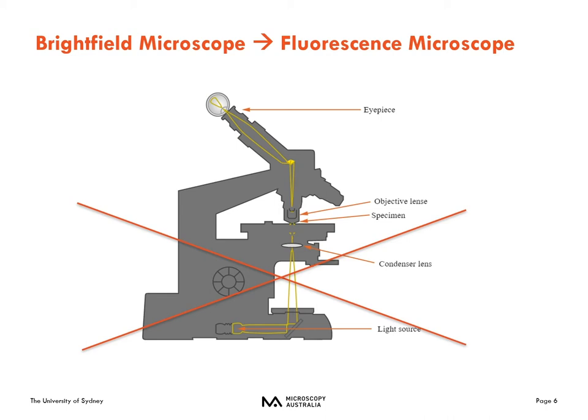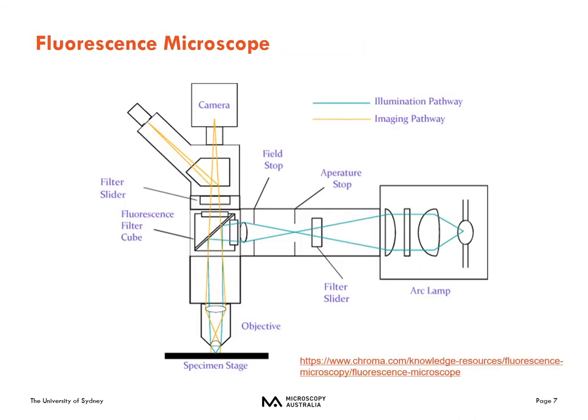In the brightfield microscope, the light is focused by the condenser. In the fluorescence microscope, we don't use any of that condenser-side light path. We're only going to use the epi light path — on this microscope, just the top half. The light path in fluorescence is entirely on the objective side, the epi side of the microscope.